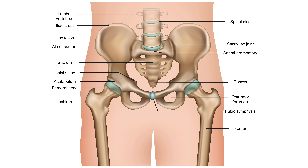Your sacroiliac joint is located in the pelvis and it includes your hips. Specifically, the sacroiliac joint, also known as the SI joint, is where your leg joins your pelvis. It is the job of your SI joint to support the weight of your body. It is distributed across the pelvis to prevent any single part of your body from bearing too much of your body weight.